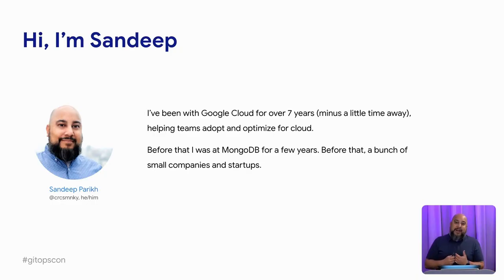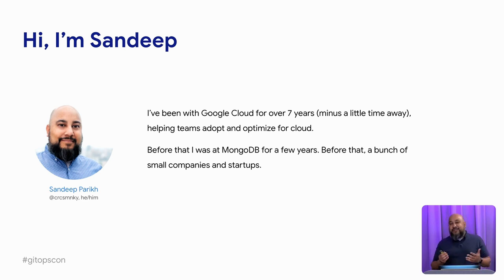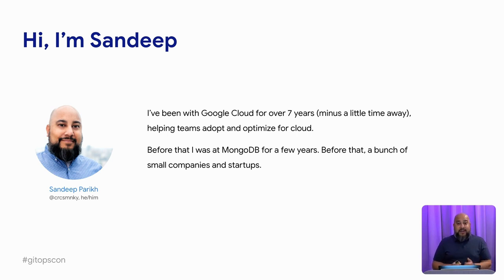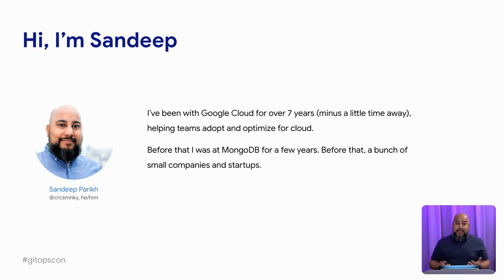My name is Sundip, and I've been with Google Cloud for almost seven years. I've had several different roles and titles over that time, but ultimately it's revolved around helping teams adopt and optimize for cloud in some form or fashion. You can always find me at CircusMonkey — that's C-R-C-S-M-N-K-Y on Twitter — if you've got questions about GitOps, DevOps, or anything else that comes to mind.